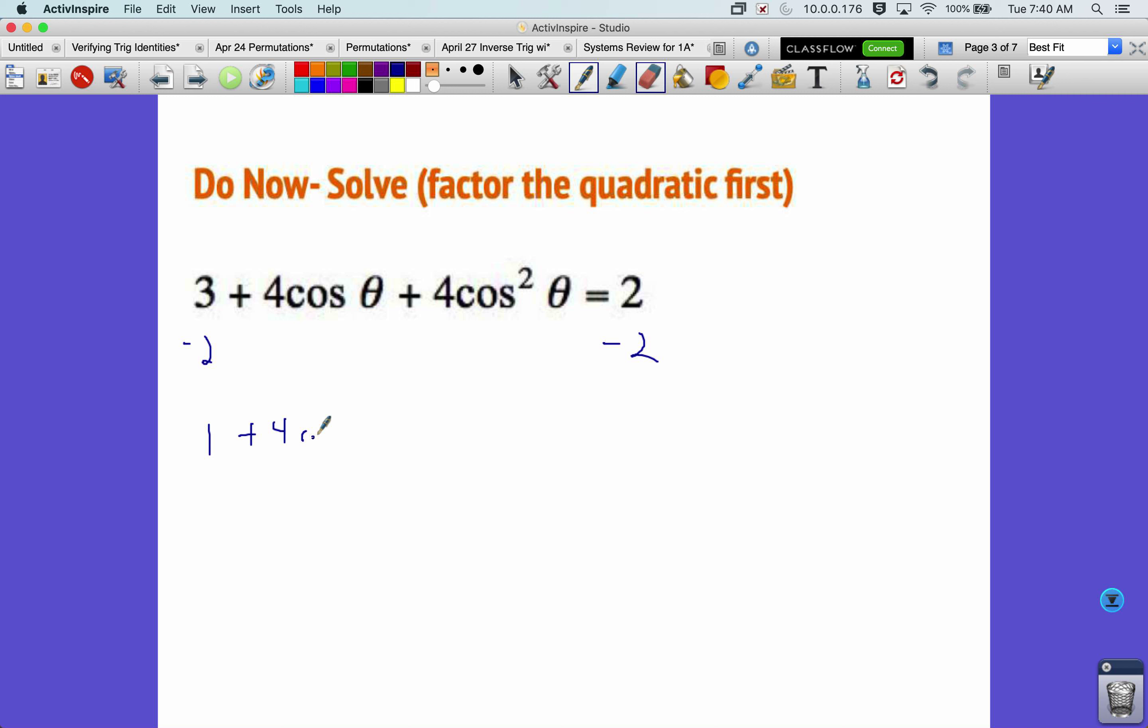One plus four cosine theta plus four cosine squared theta equals zero. All right, now can I factor this? I'm going to kind of rearrange my head and bring the four cosine squared in front and the one to the end. So it's more like quadratic form.